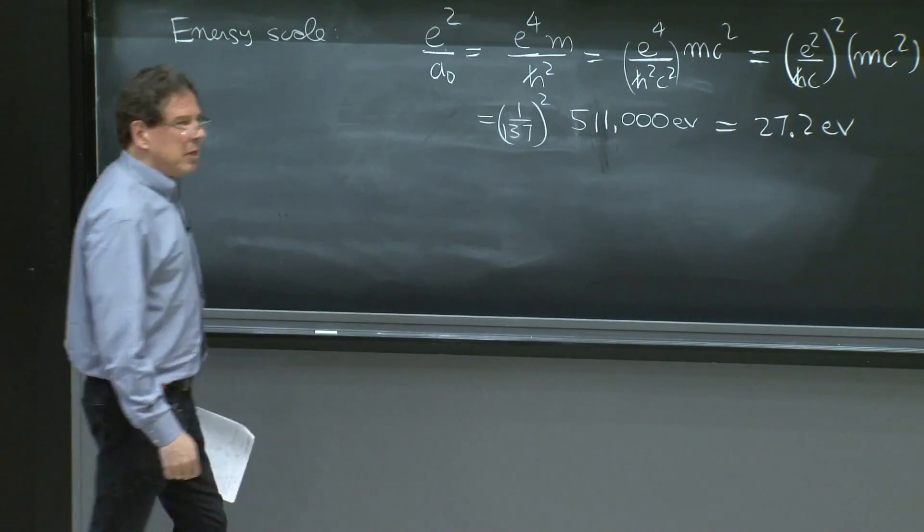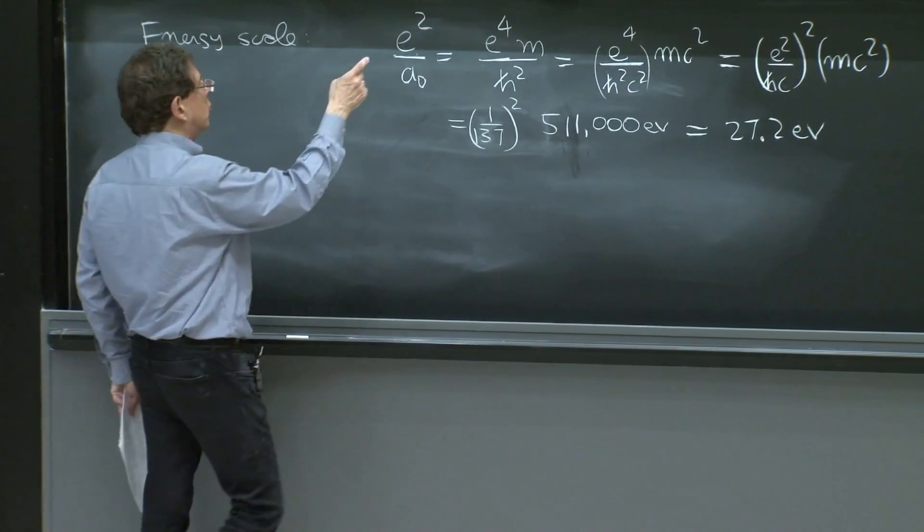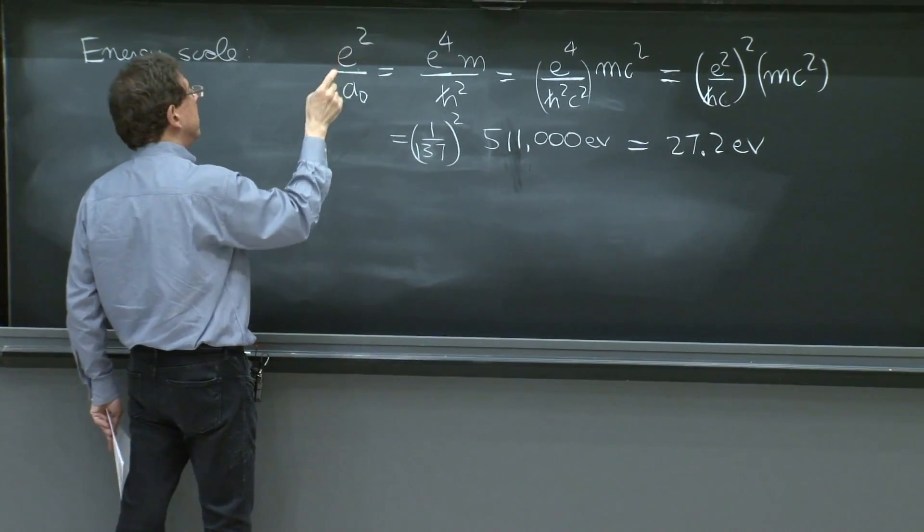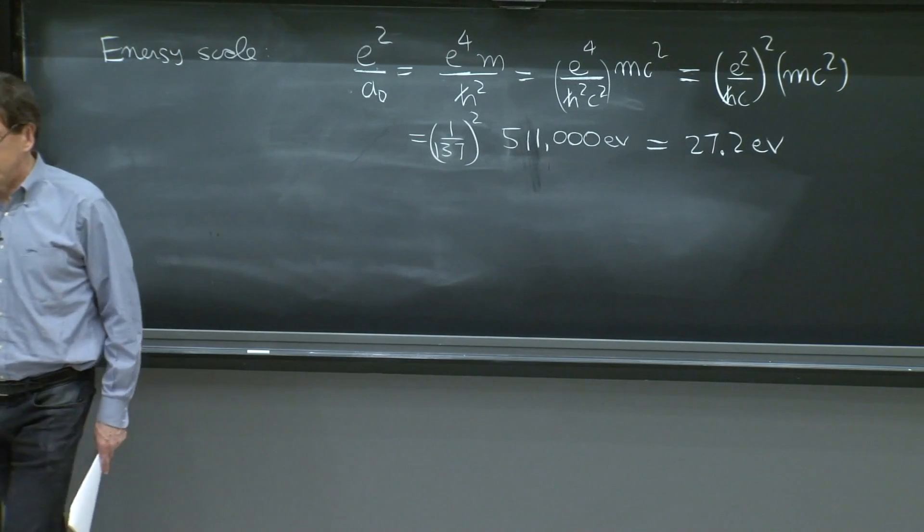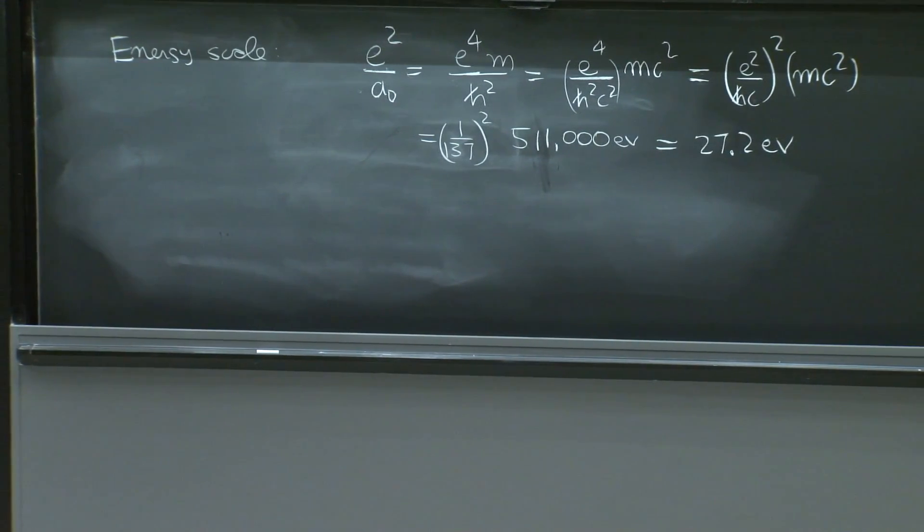And the reason this may sound familiar is because the true ground state energy of the hydrogen atom is this number divided by 2, which is 13.6 eV. So of course, you would not know at this stage, because you're just doing numbers.